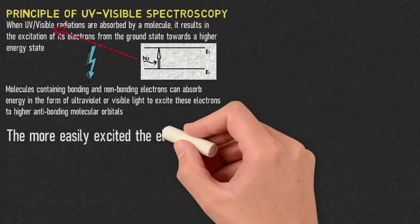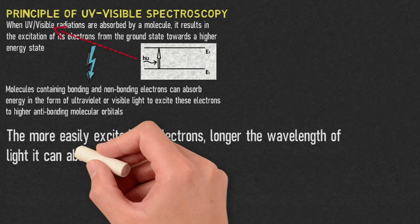The more easily excited the electrons, the longer the wavelength of the light it can absorb.